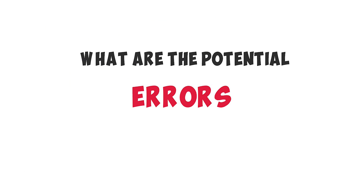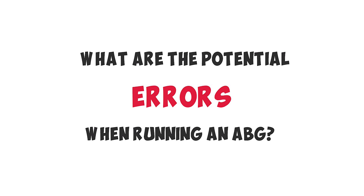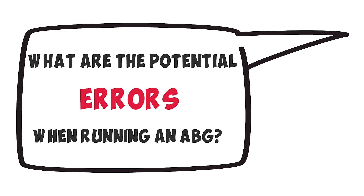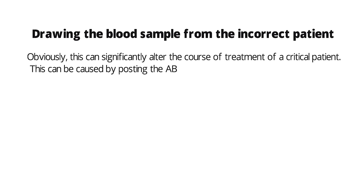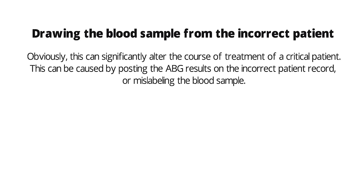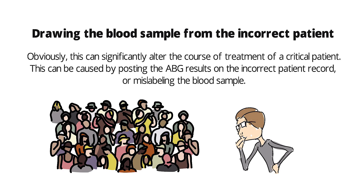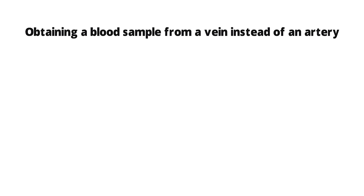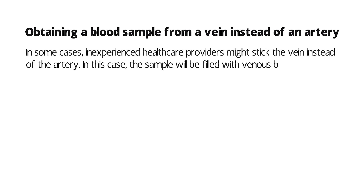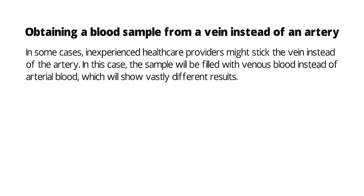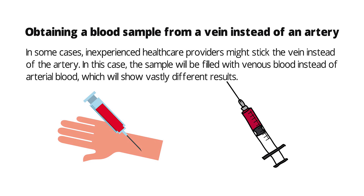What are the potential errors when running an ABG? First, drawing the blood sample from the incorrect patient — this can significantly alter the course of treatment and can be caused by posting results on the incorrect patient record or mislabeling the blood sample. Second, obtaining a blood sample from a vein instead of an artery — inexperienced providers might stick the vein, resulting in venous blood instead of arterial blood, which will show vastly different results.